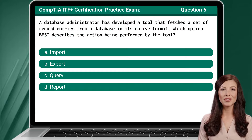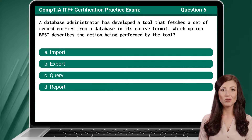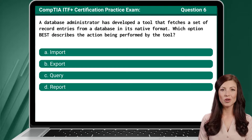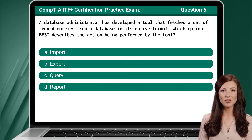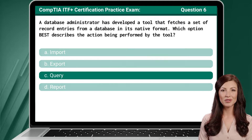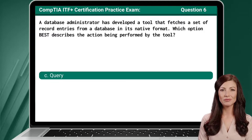Question 6. A database administrator has developed a tool that fetches a set of record entries from a database in its native format. Which option best describes the action being performed by the tool? The answer is C: Query.